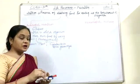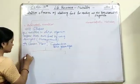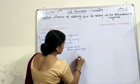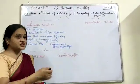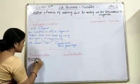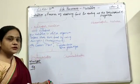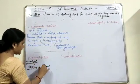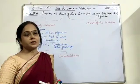Autotrophic nutrition is further classified into two categories: photo-autotrophic nutrition and chemo-autotrophic nutrition. Photo-autotrophic nutrition — where 'photo' means sunlight — is the type of nutrition where sunlight is necessary to prepare food. Examples are green plants and cyanobacteria, which use the photosynthetic mechanism to prepare their own food.